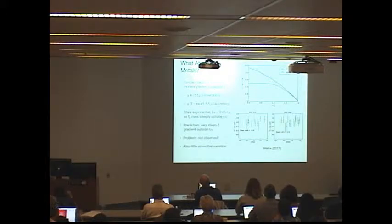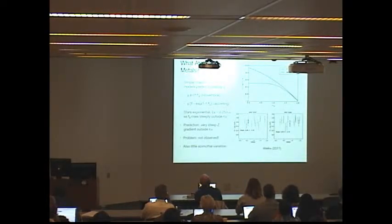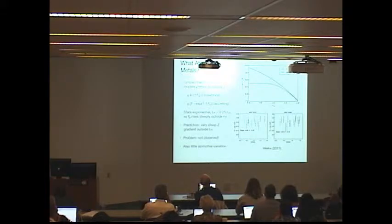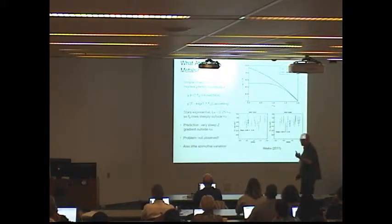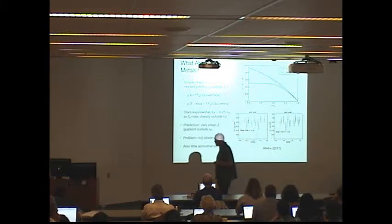The problem is, you don't see anything like that. If you look at what's actually observed outside of R25 — here's some data from Jess's work — it's flat. So if the metals just sit at the galactocentric radius where they're made, you unavoidably get a very steep gradient in metallicity at large galactocentric radii, and that's exactly the opposite of what we observe. We also observe very little azimuthal variation, and we'd like to explain that too.